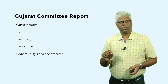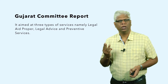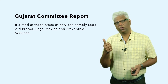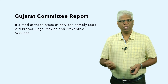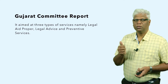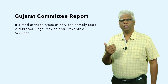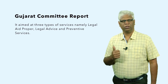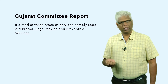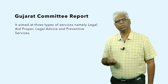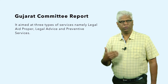Another recommendation from the Gujarat committee is that three types of services could be given: first, legal aid proper — providing free legal aid for litigative services, meaning representation of the client in court; second, legal advice — providing advice to clients who are unable to pay for it; and third, preventive services — the basic idea being to avoid litigation reaching court by providing some conciliation between the disputing parties.